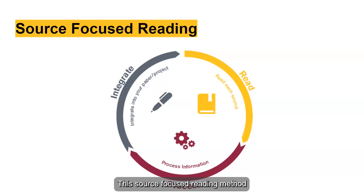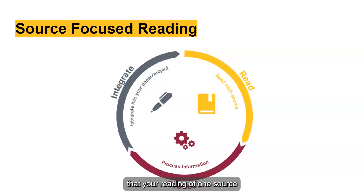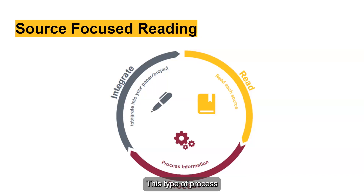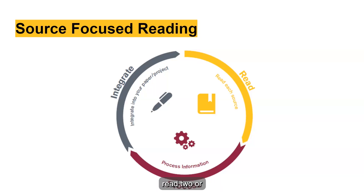This is source-focused reading. The method doesn't account for some of the messiness and serendipity of reading. Messiness and serendipity refer to the fact that your reading of one source could influence you in many ways — it can help you rethink a topic or inspire you to find another source. This type of process can foster narrowness and prevent a writer from seeing the larger picture of sources. In other words, don't always read just to put sources into a paper. Once you've read two or three sources, it's time to go back and decide if the source should still be integrated into your paper.